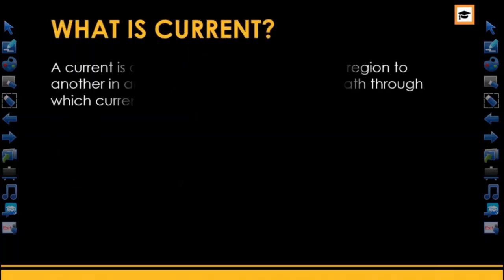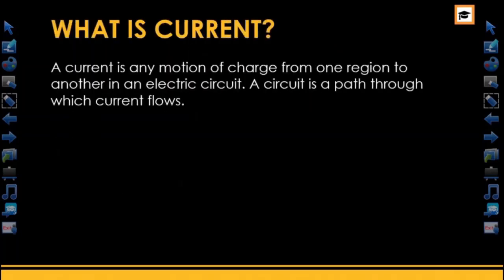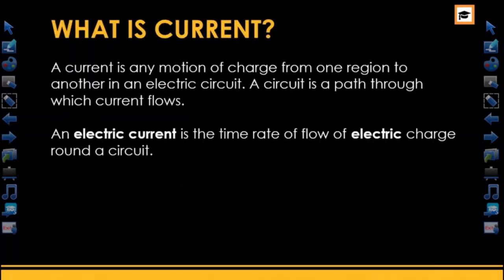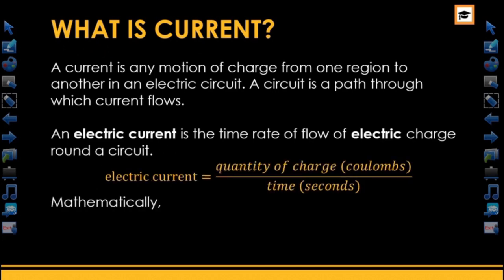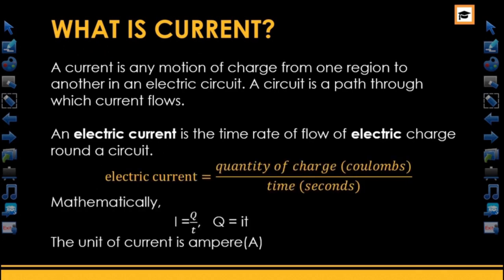Current can be defined as any motion of charge or electrons from one region to another in an electric circuit. The circuit, on the other hand, is the path through which current flows.